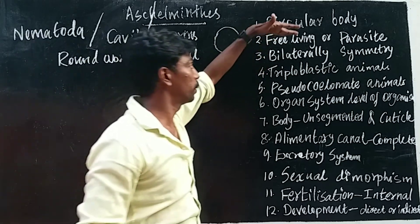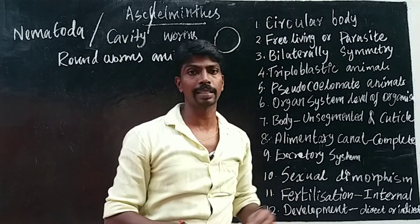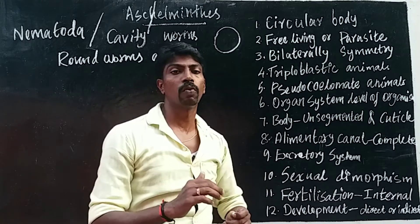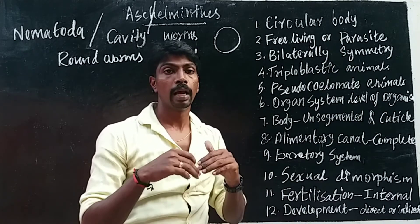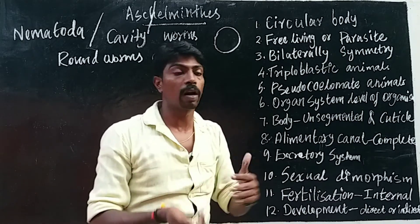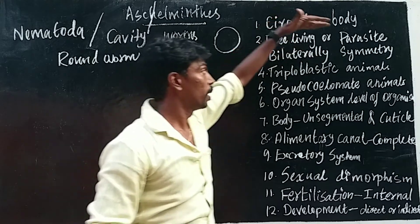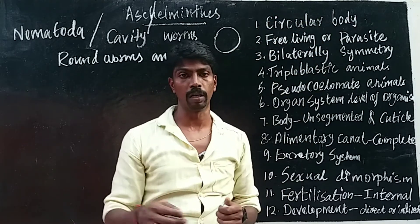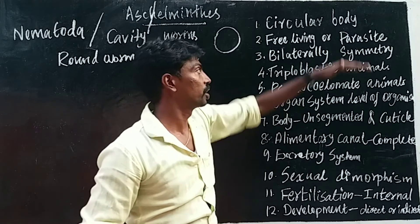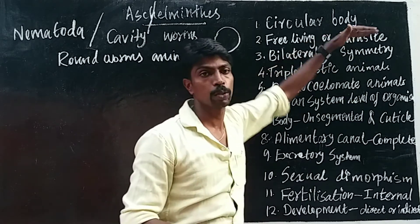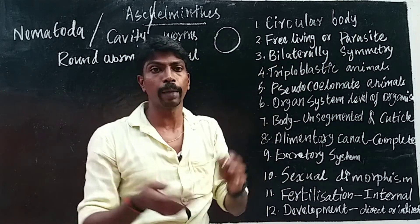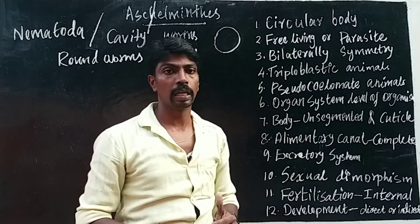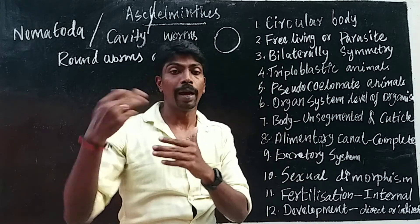The second point: they are free-living or parasitic animals. Free-living means mostly they live in aquatic environments. The other type is known as parasitic animals. So there are two types: free-living aquatic animals and parasitic animals.